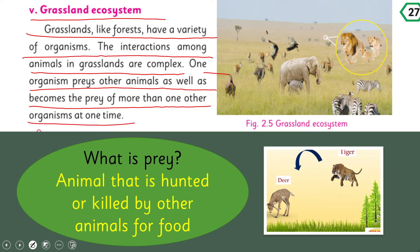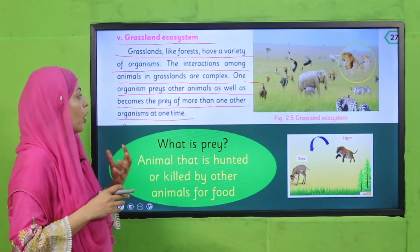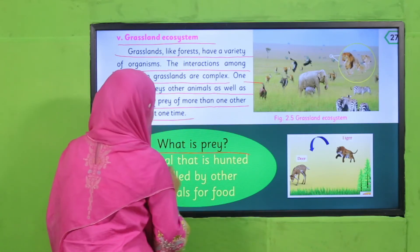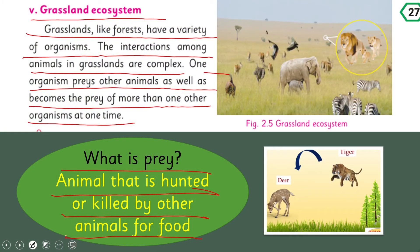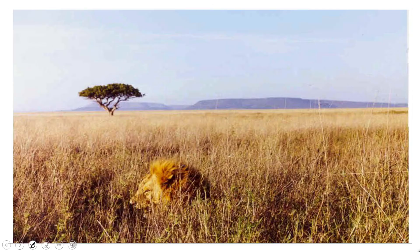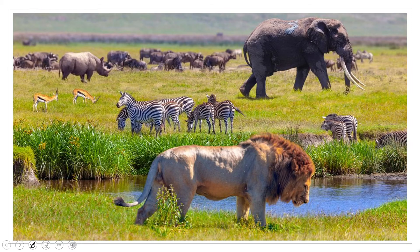Prey is an animal that is hunted or killed by other animals for food. For example, a deer feeds on grass, whereas tigers feed on deer — that is the connection that makes it an ecosystem. Broom brush is present in the grassland ecosystem, and lions, zebras, and deer are all inhabitants of the grassland ecosystem.